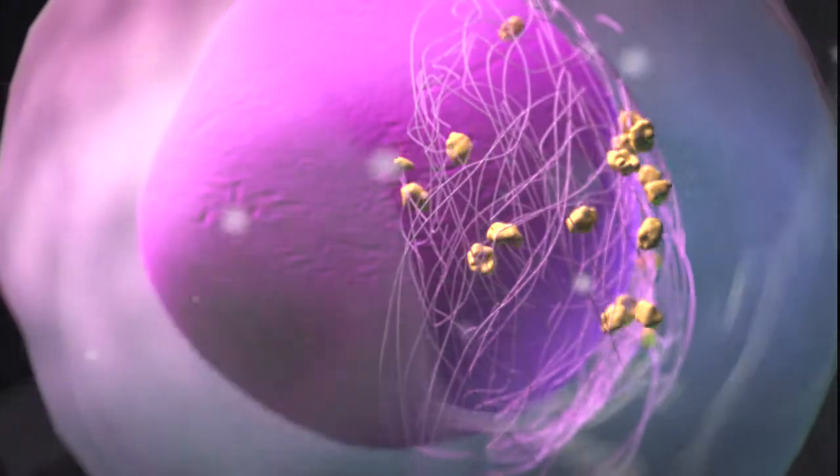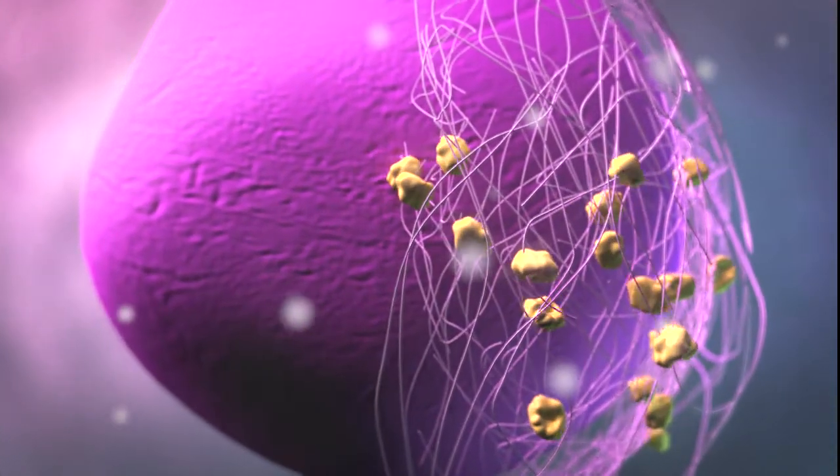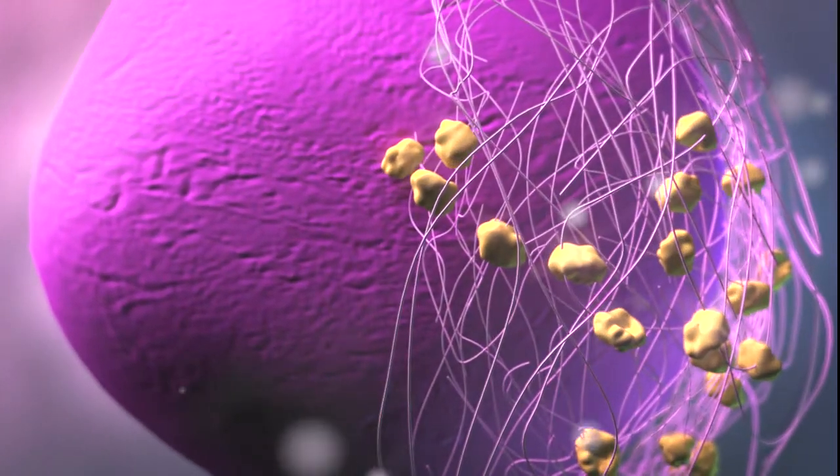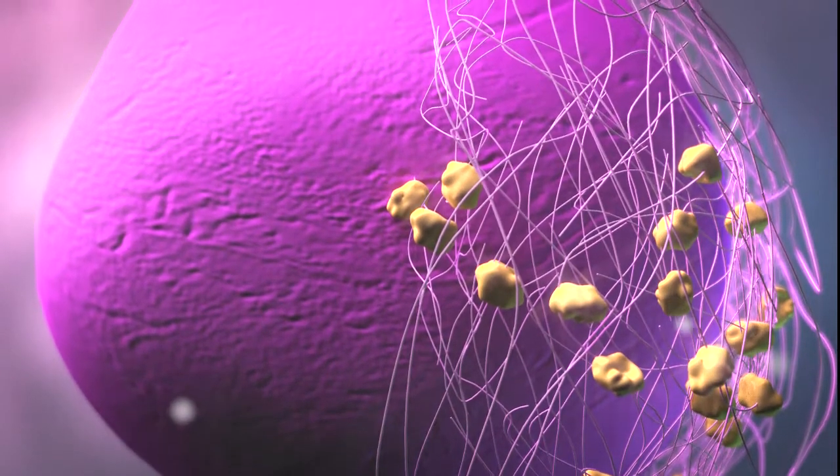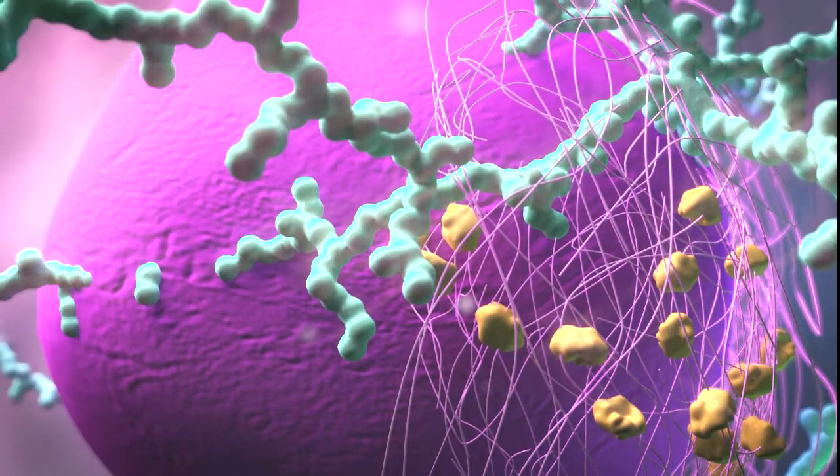The RNA clusters attract ribosomes and other RNA-binding proteins. The ribosomes begin the process of translation without a start codon, creating proteins that are toxic to the cell.